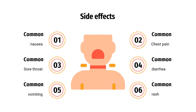Side effects of mucolytics include nausea or vomiting, diarrhea, rash, sore throat, loss of voice or change in voice, shortness of breath (dyspnea), and chest pain. Mucolytics make it easier to clear mucus out when you cough — they don't necessarily make you cough more.